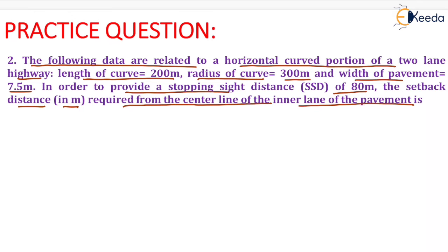We need to calculate the setback distance required from the center line of the inner lane of the pavement. We know that the formula for setback distance when the length of curve is greater than the side distance is: m = R minus (R minus d) into cos(alpha/2).